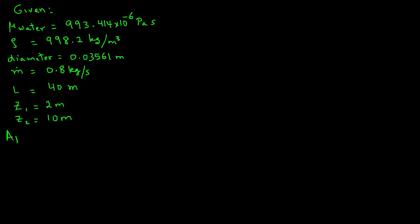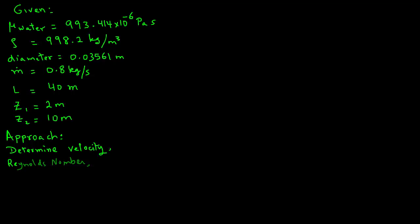Our approach will be to first determine the mean velocity of water in the pipe, then calculate the Reynolds number, and from the Reynolds number use an appropriate diagram to find the friction factor. Then we will use the energy equation developed in previous tutorials to determine the power requirement for the pump.